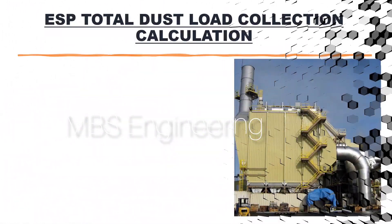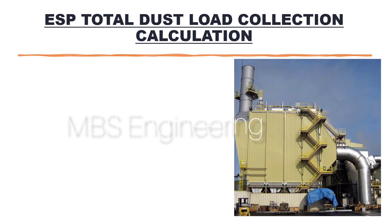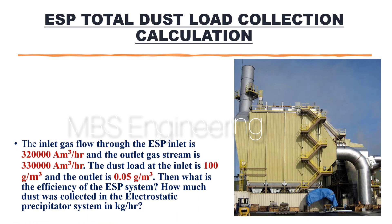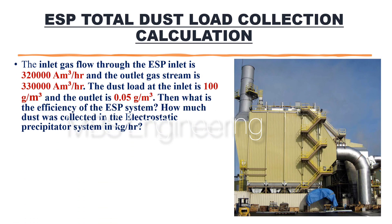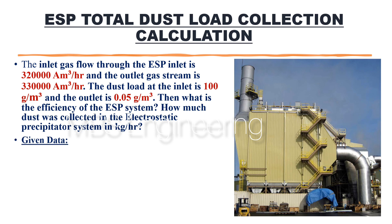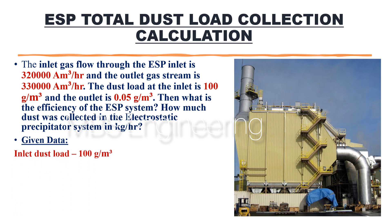We will look at the ESP total dust load collection calculation for a better understanding. The inlet gas flow through the ESP is 3,20,000 cubic meters per hour and the outlet gas stream is 3,30,000 cubic meters per hour. The dust load at the inlet is 100 grams per cubic meter and at the outlet is 0.05 grams per cubic meter. Then, what is the efficiency of the ESP system, and how much dust was collected in kilograms per hour?